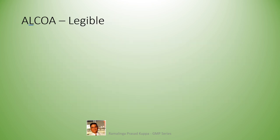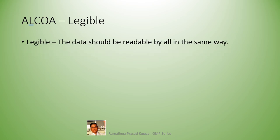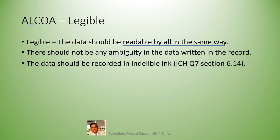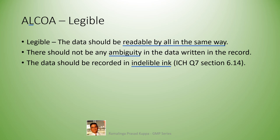The second letter of ALCOA is L for Legible. The data should be readable by all in the same way. It should not be like a handwritten prescription by some medical practitioners, which can be read correctly only by the pharmacist. There should not be any ambiguity in the data written in the record. The numbers and letters should be clear so that everyone can read them in the same way. The data should be recorded in indelible ink as prescribed in section 6.14 of ICH Q7. Never record any data with pencil.